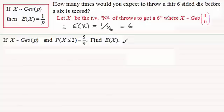Now in this second example, I said to you that this would be a bit more demanding. If X follows a geometric distribution with parameter P, and the probability of X being less than or equal to two is five-ninths, find E of X.